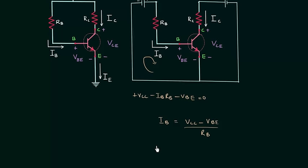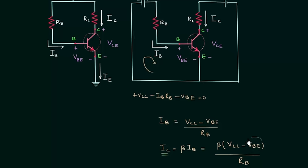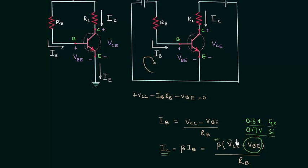We already know the collector current: Ic is equal to beta times Ib. Vbe is equal to 0.7 volts for silicon and 0.3 volts for germanium, because Vbe is the voltage across the forward-biased diode. Using the constant voltage drop model, if we know the beta value, the biasing potential, and the resistance Rb, we can easily calculate the output current Ic.